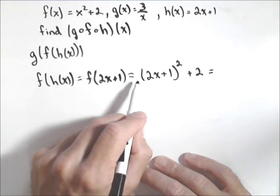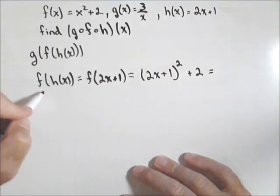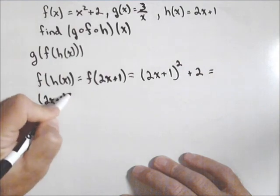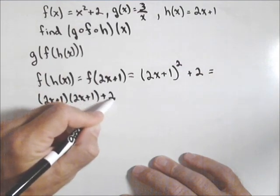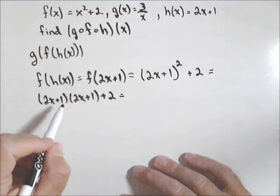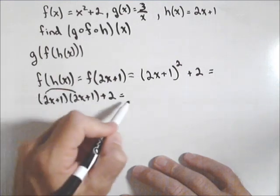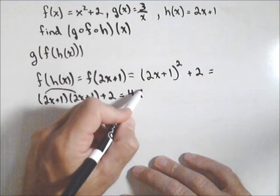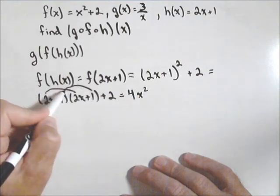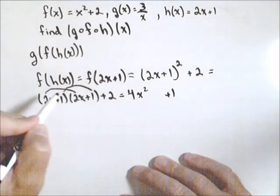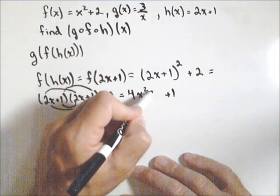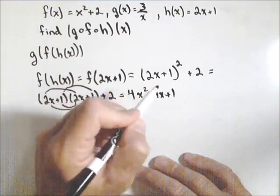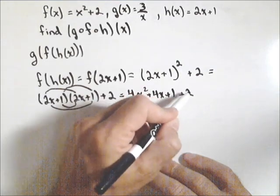Now remember, this needs to be foiled out. It's actually two x plus one times two x plus one, plus two at the end. So doing our foiling, we have four x squared plus one, plus two x plus two x, so plus four x, and don't forget our plus two from the line before.